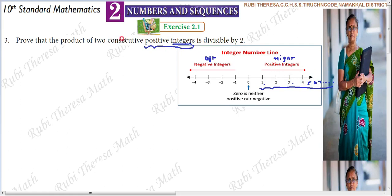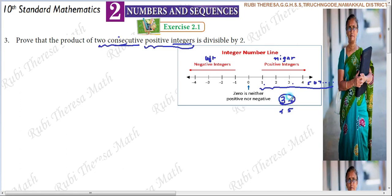Here we have to consider consecutive positive integers. Consecutive integers means the next number in sequence. For example, 3's next integer is 4, and 4's next integer is 5. So two consecutive positive integers are any number and its next number.